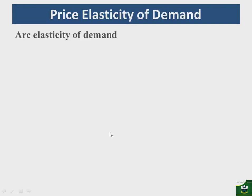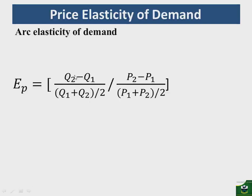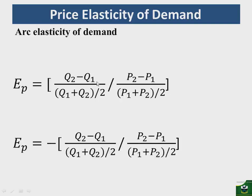Stretching that further: ΔQ is Q2 minus Q1, and the average is (Q1 + Q2)/2. ΔP is P2 minus P1, and the average is (P1 + P2)/2. Because the result will be negative, we can simply prefix a negative sign and solve the formula to find a positive elasticity. Otherwise, you can find the elasticity and then take the absolute value to find the positive coefficient.